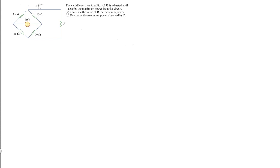This is problem 4.67 from the text. The problem reads: the variable resistor R in the figure is adjusted until it absorbs maximum power from the circuit. Calculate the value of R for maximum power, and determine the maximum power absorbed by R. So we are interested in finding the power consumed by this external load R.